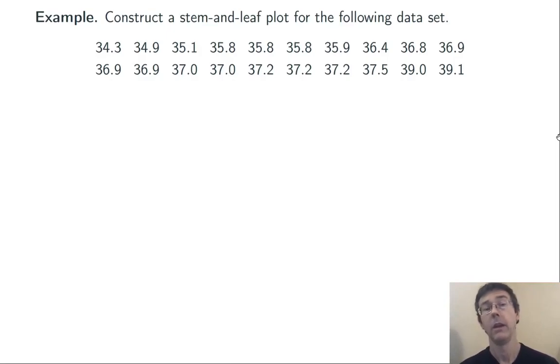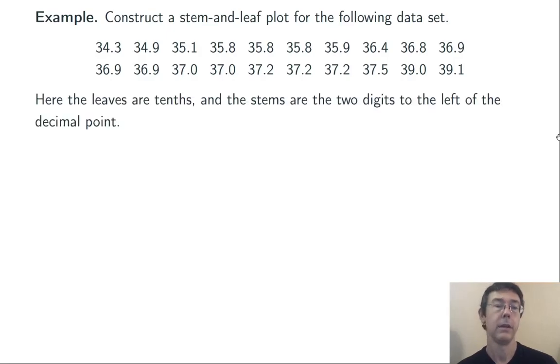Here's another example. Construct a stem and leaf plot for the following data set. So here, the leaves are going to be the tenths, and the stems are going to be the two digits to the left of the decimal point. So our first few entries are going to be 34 slash 3, 34 slash 9, and then going down to the next stem, 35 slash 1, where the decimal point is going to be at the slash.